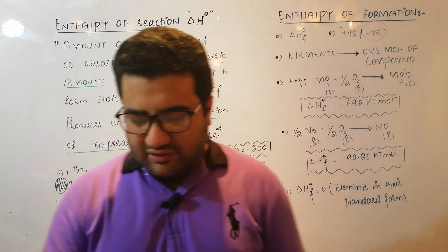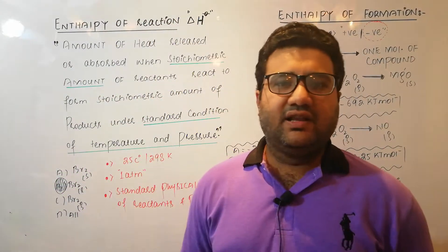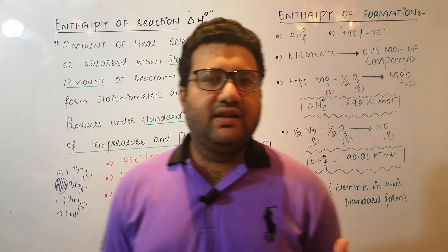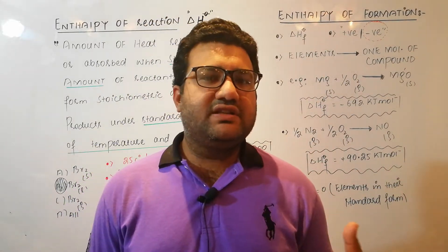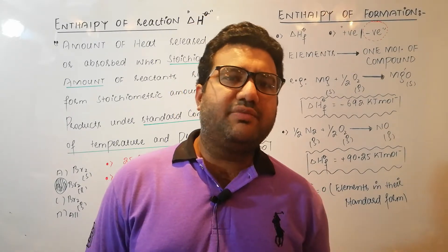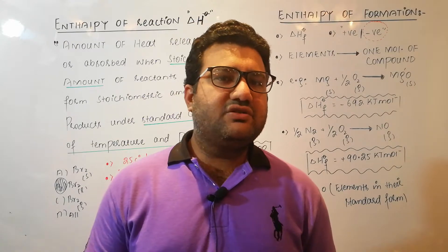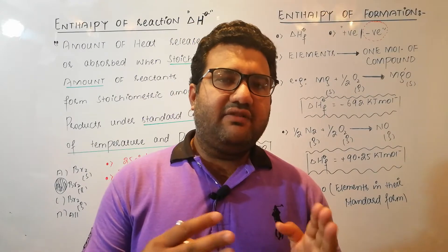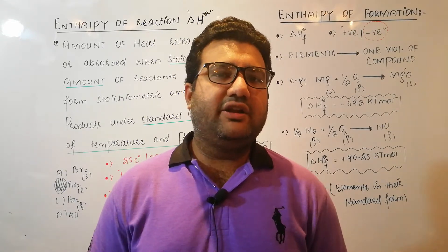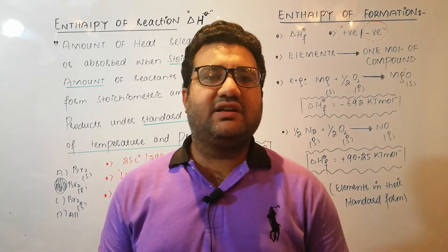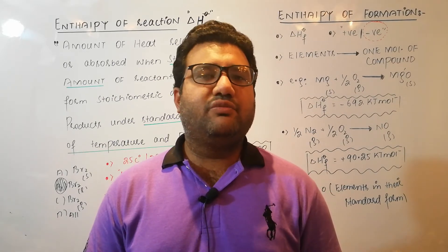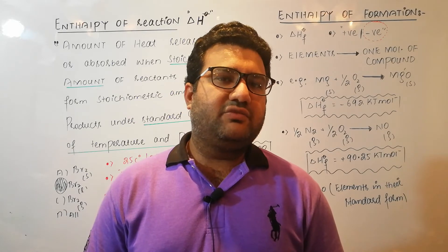It is not necessary that all allotropes of an element have a standard enthalpy of formation of zero. For example, ozone O₃ has an enthalpy of formation of +142.7 kJ/mol — it is not equal to zero even though it is an allotropic form of oxygen. This is because ozone is highly unstable, and when ozone is formed via a photochemical reaction there is a dynamic equilibrium between molecular oxygen and ozone, with energy absorbed in the form of radiation. So +142.7 kJ/mol is the enthalpy of formation of ozone.